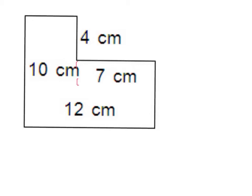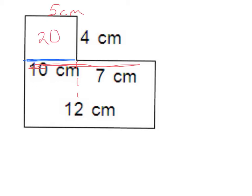I could draw a line down this way or make a line across this way, and it doesn't matter which one you do because it works out the same. I'm going to go with that solid blue line. Dealing with the top figure, I have 4 centimeters. This line here is 12, and 12 minus 7 is 5, so the length of this top line is 5 centimeters. 5 times 4 is 20, so the area of the top rectangle is 20 centimeters squared.